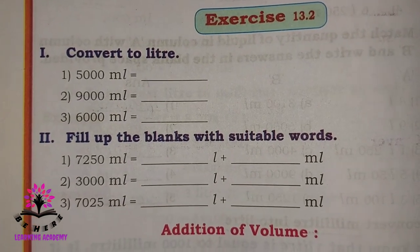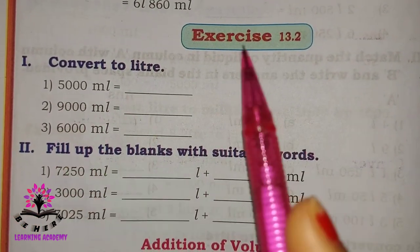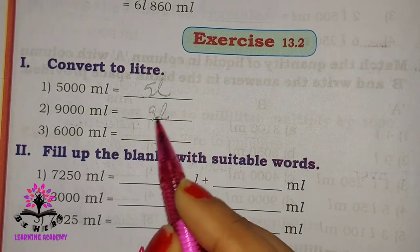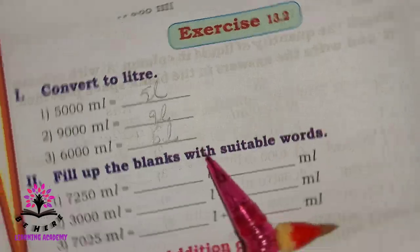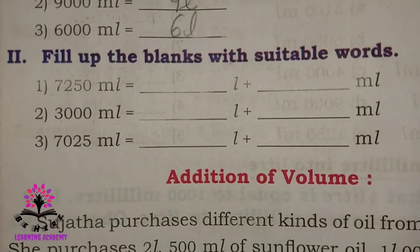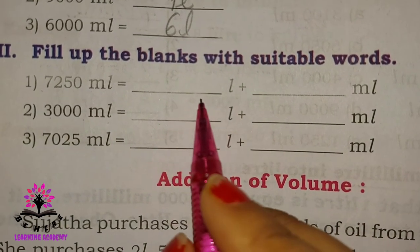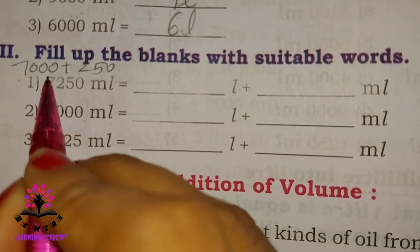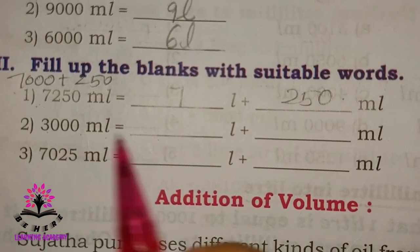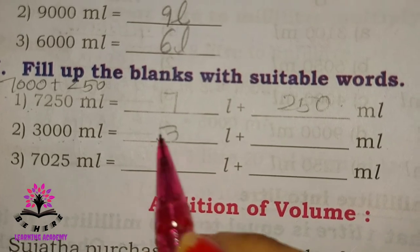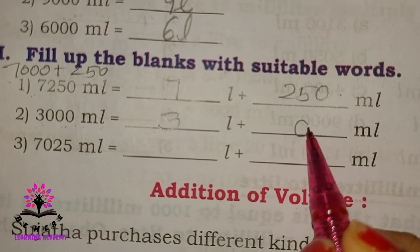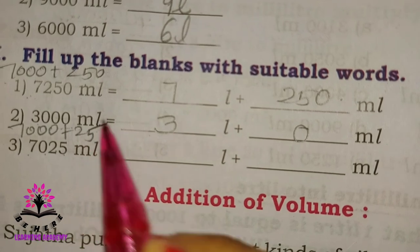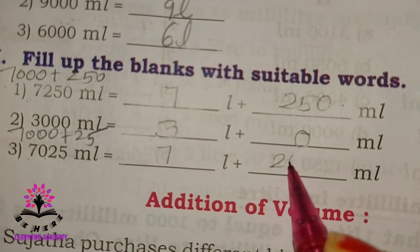Exercise 13.2, part one — convert to liters: 5000 ml = 5 liters, 9000 ml = 9 liters, 6000 ml = 6 liters. Fill in the blanks: 7250 ml = 7 liters 250 ml. 3000 ml = 3 liters 0 ml. 7025 ml = 7 liters 25 ml.